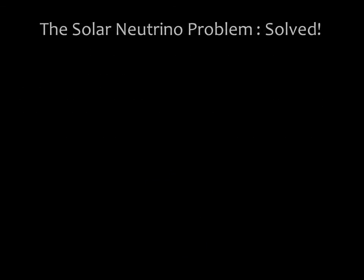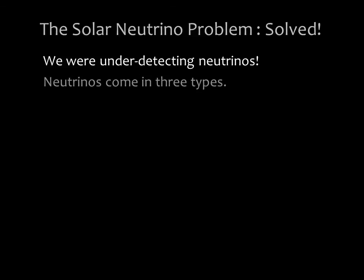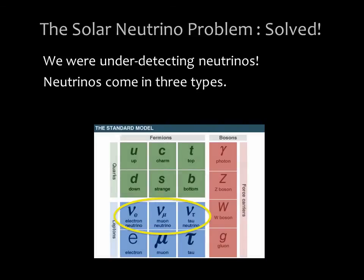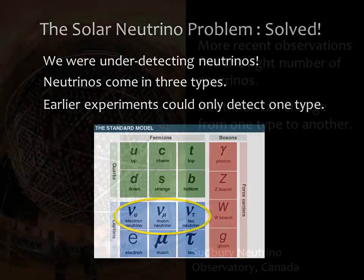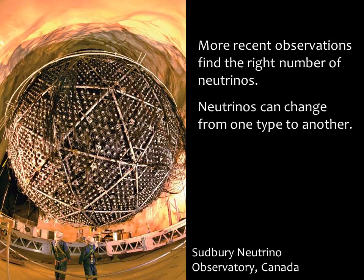We now know that the missing solar neutrinos were going under-detected. It turns out that neutrinos come in three distinct types, and early solar neutrino detectors could detect only one type. More recent detectors, like the Sudbury Neutrino Observatory shown here, can detect all three neutrino types. The results confirm that the total number of solar neutrinos is equal to what we expect from our models of nuclear fusion in the sun. We've learned that neutrinos change from one type to another on their journey from the sun's core to its surface.